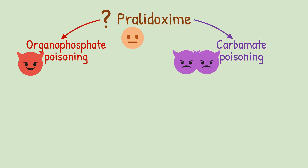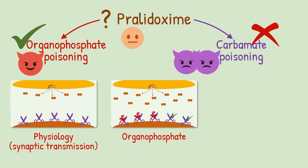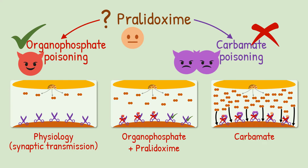Hello. In this video, we will see why cholinesterase reactivator pralidoxime is indicated in organophosphate poisoning but contraindicated in carbamate poisoning. To understand this, first we will see relevant physiology of synaptic transmission. Then we will see what happens in organophosphate poisoning and how pralidoxime provides benefit in it. Then we will see carbamate poisoning and what happens if you give pralidoxime to such a patient. Let's get started.